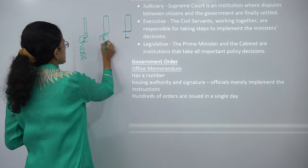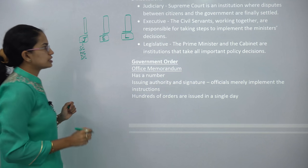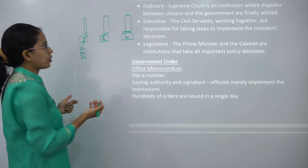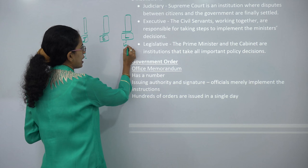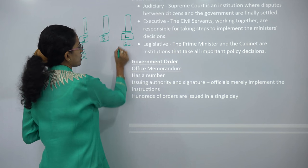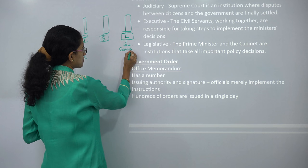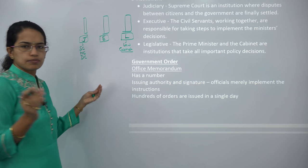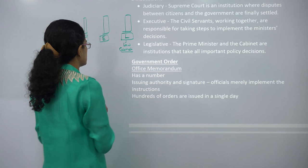The next two pillars are Executive and Legislature. Legislature is basically the law-making body. This law-making body includes the Cabinet, the Prime Minister, and the policy decisions that come through Lok Sabha and Rajya Sabha.